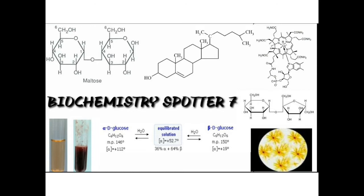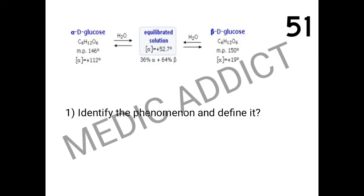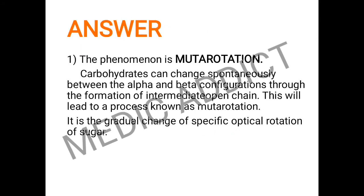Let's begin with the 7th part of the biochemistry spotters. The 51st spot shows a conversion of the glucose molecule from alpha configuration to the beta configuration and in the equilibrium, a particular glucose molecule is obtained. We have to identify and define this phenomenon. This phenomenon is mutarotation — the definition is that carbohydrates can change spontaneously between the alpha and the beta configuration through the formation of an intermediate open chain, leading to a gradual change of specific optical rotation of the sugar.